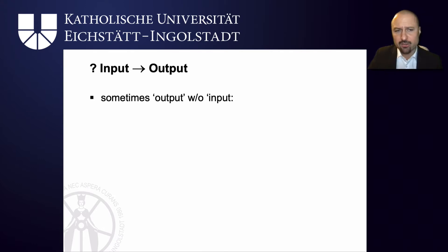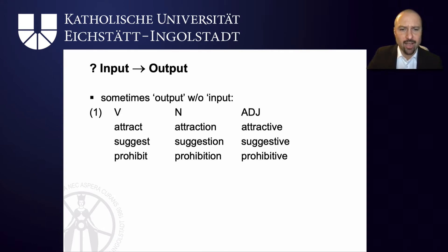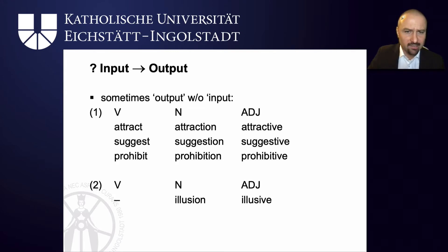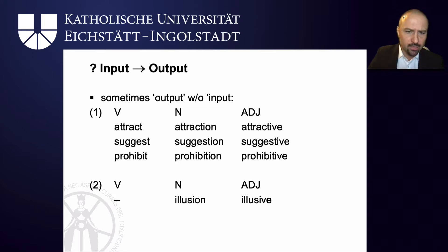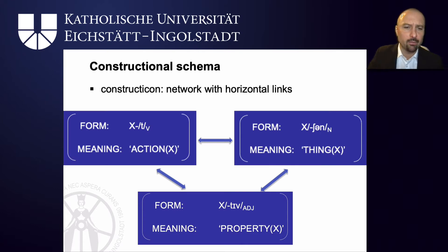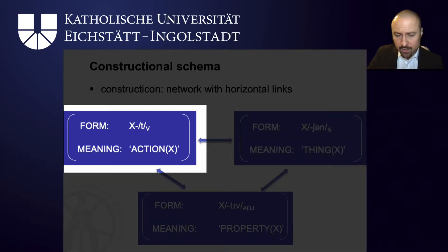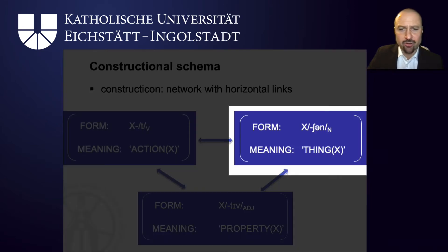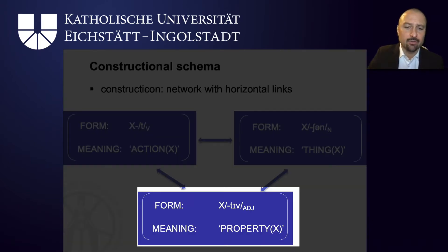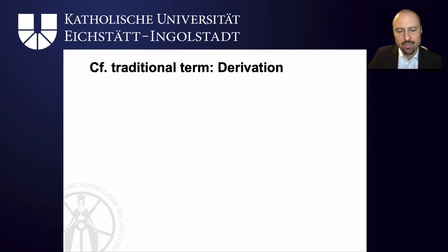This works particularly well in situations where we don't seem to have an input. Attract, attraction, attractive; suggest, suggestion, suggestive; and prohibit, prohibition, prohibitive all seem to fit an input-output approach. But illusion and elusive exist and they pattern with attraction, suggestion, prohibition and attractive, suggestive, prohibitive — yet there is no verb illus. So instead of assuming the verb is always the input for the noun and adjective, we adopt a taxonomic approach using schemas: one schema for attract and suggest as verbs denoting actions, linked to attraction and suggestion which construe these as things.